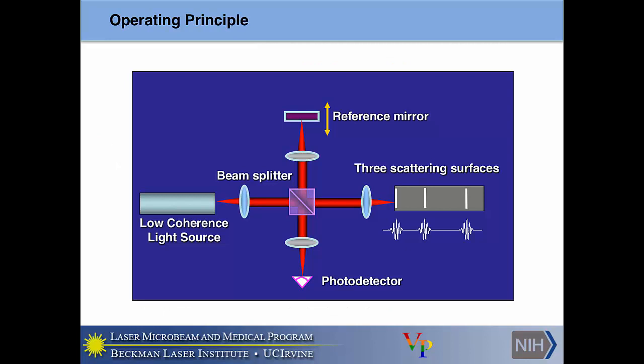The operating principle for OCT is that we take our low coherence light source, split it at a beam splitter, project it onto a reference mirror, and have a scattering sample. In this case, we have three idealized scatterers in the sample arm. As the reference arm moves back and forth, it allows us to probe deeper depths within the sample tissue, essentially performing range finding of the axial optical scattering reflectivity profile.